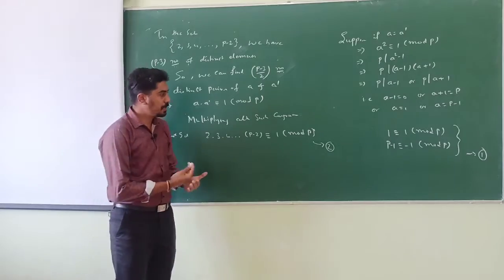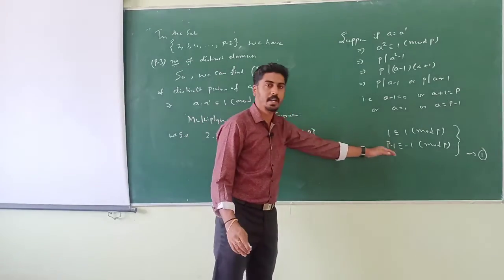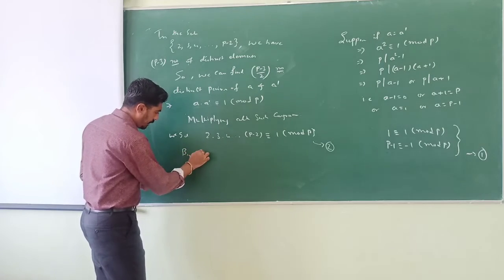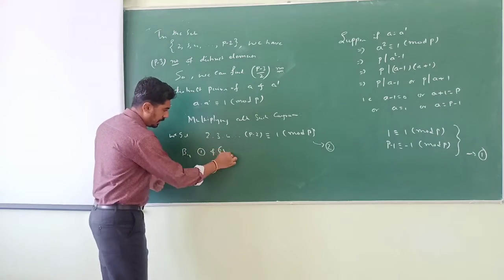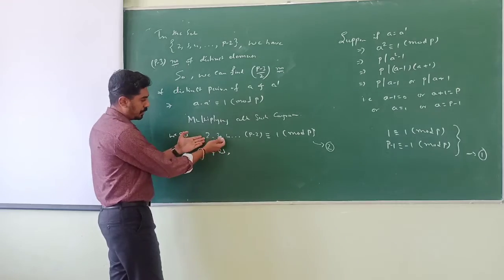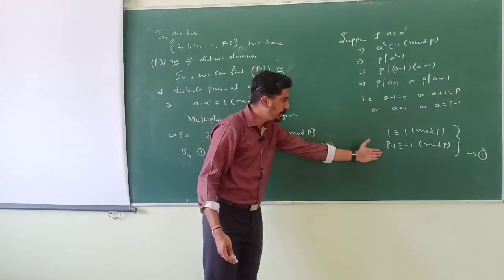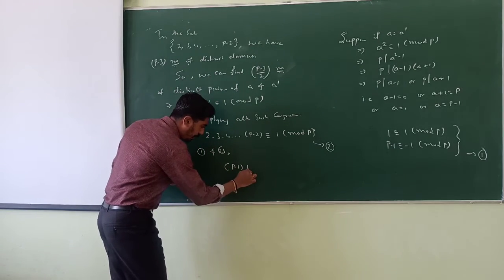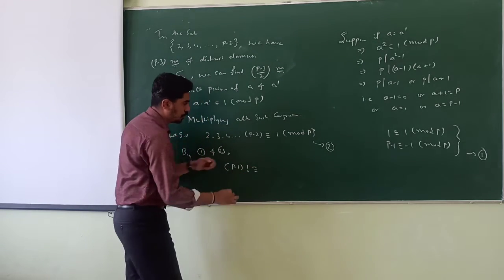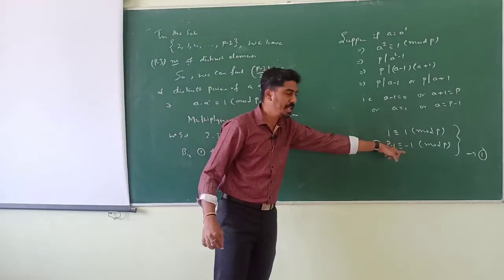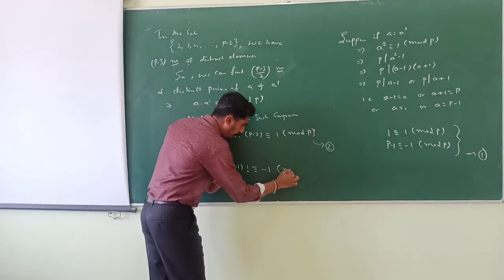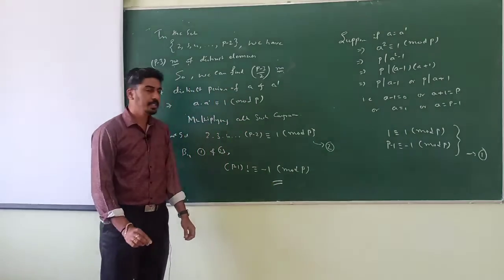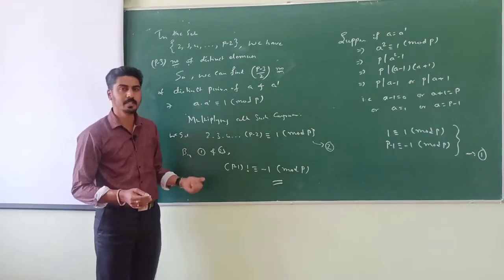Now multiplying equation 1 and equation 2, we get 2 · 3 · 4 · ... · (p minus 2) · (p minus 1) · 1 = (p minus 1)! which is congruent to 1 · 1 · (minus 1) = minus 1 (mod p). This completes the proof of Wilson's theorem.